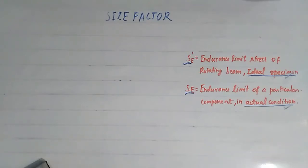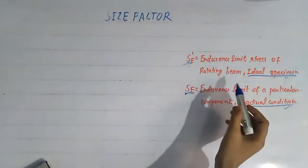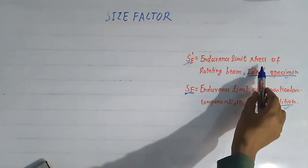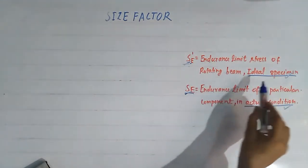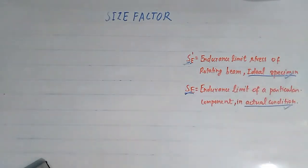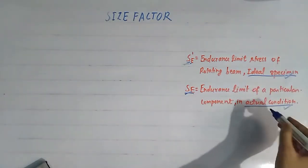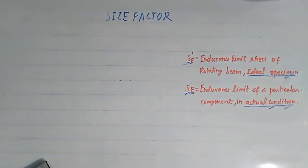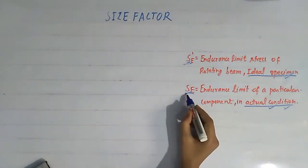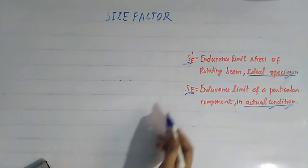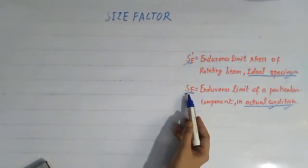Welcome to my YouTube channel. Today I am going to discuss the effect of size on the endurance limit of a component. Here Se' denotes the endurance limit stress of a rotating beam ideal specimen, and Se denotes the endurance limit for the actual condition — the component which is subjected to fluctuating stress.